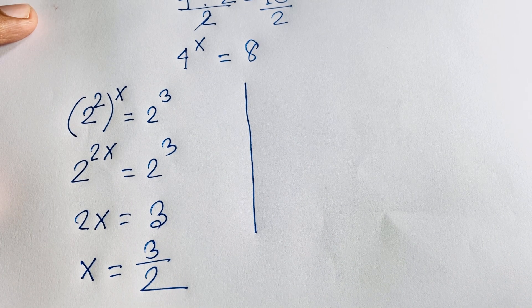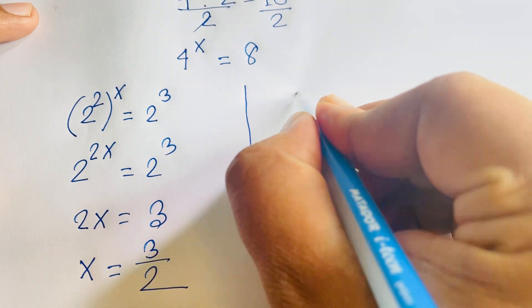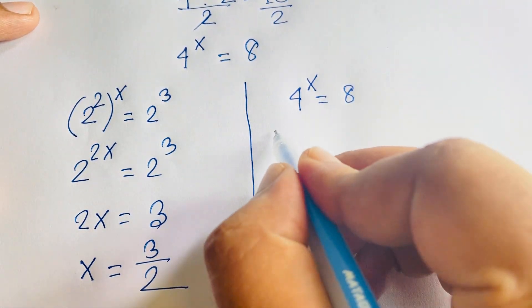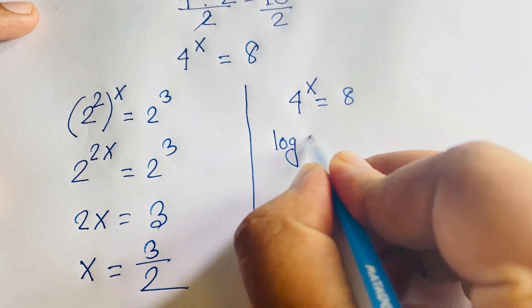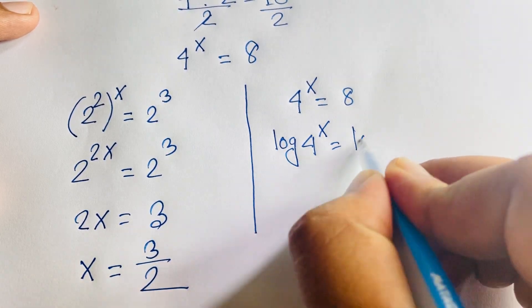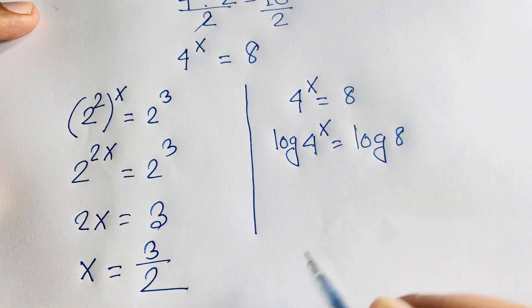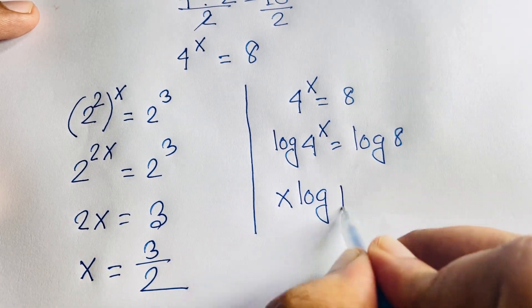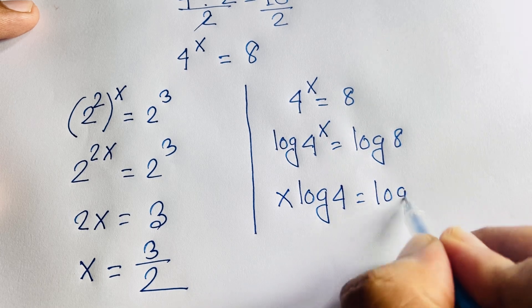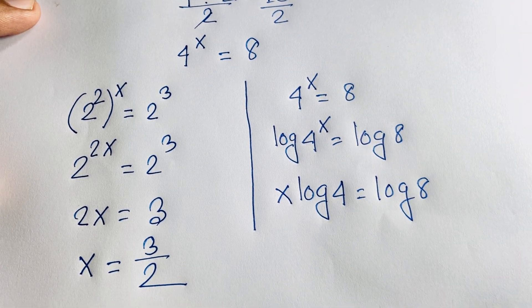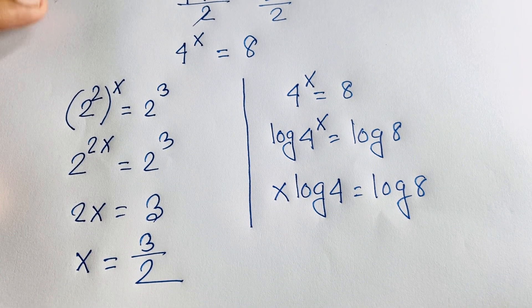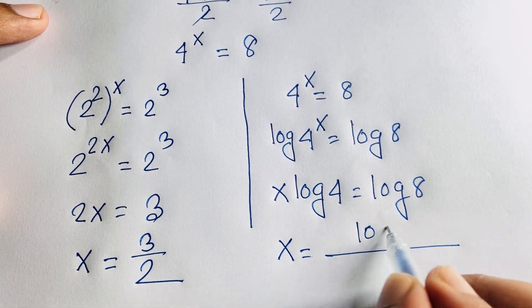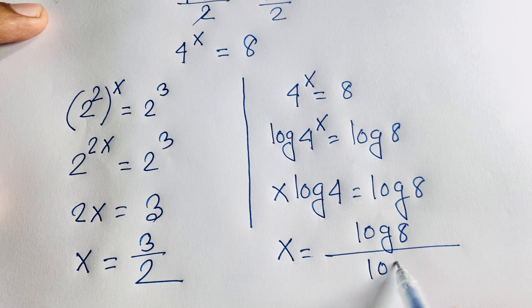So we find out the value of x. Our equation is 4 to the power x equals 8. Now I use both sides natural log: log of 4 to the power x equals log 8. The exponent moves down according to logarithm rules, giving x times log 4 equals log 8. Dividing both sides by log 4, we find x equals log 8 over log 4.